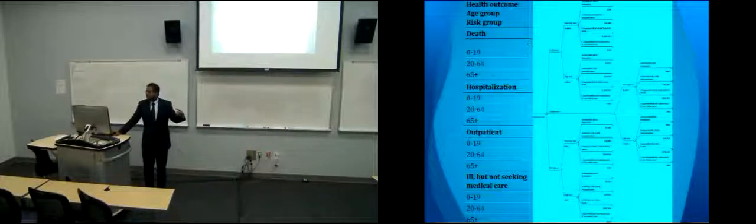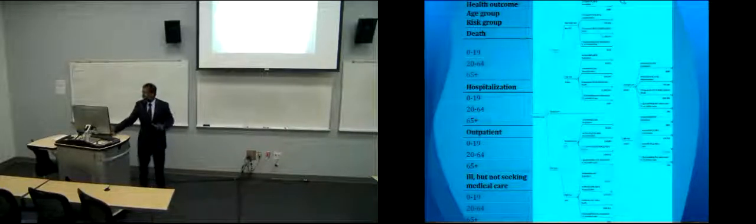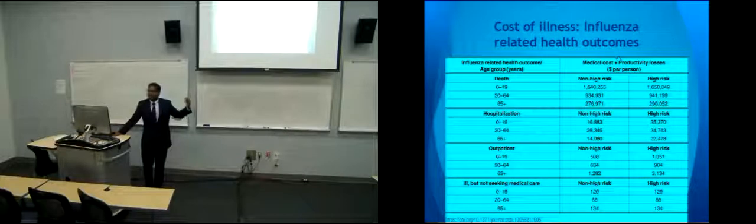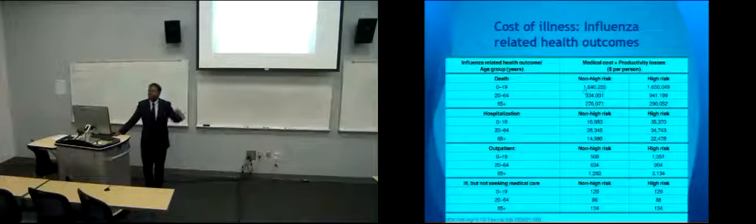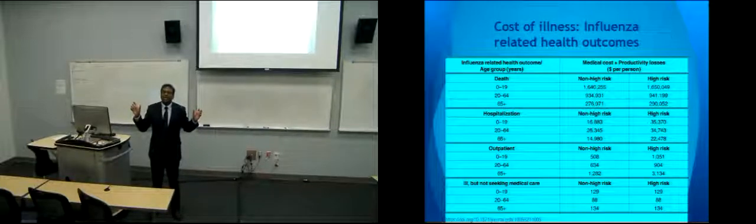The costs include the primary medical cost, but if there's a death there's also productivity loss, and if you're taking time off work there's also productivity loss — all taken into account when computing these numbers. For example, a death among low-risk children corresponds to a cost of roughly $1.6 million. The estimates come from cost-of-illness studies.